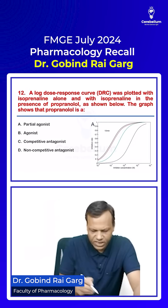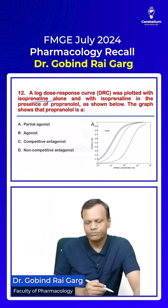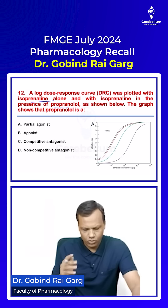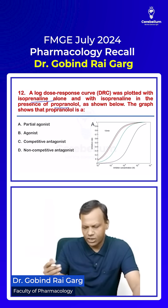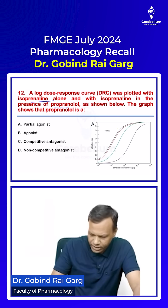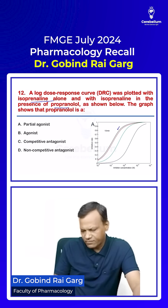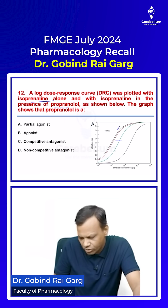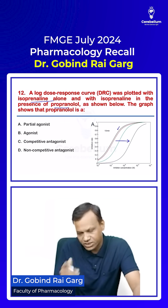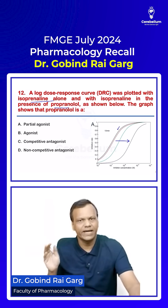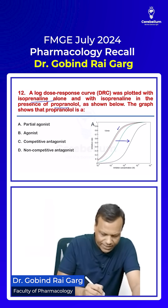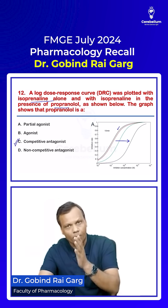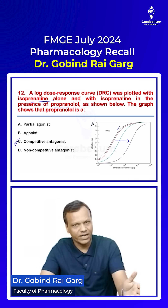A log DRC was plotted with isoprenaline alone and with isoprenaline in the presence of propranolol. If we use only isoprenaline the curve is here, then if we keep on increasing the dose of propranolol, the graph keeps on shifting toward the right. It is a parallel shift to the right, and a parallel shift to the right tells that it is a competitive antagonist. So propranolol is a competitive antagonist of isoprenaline.